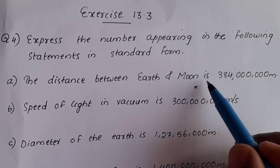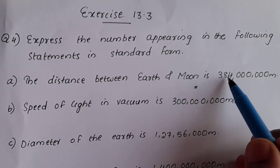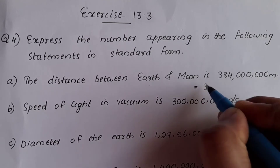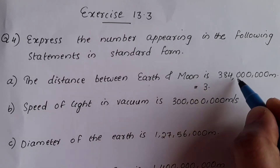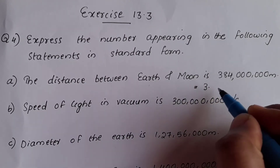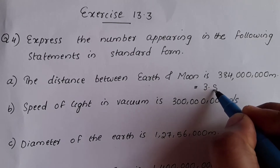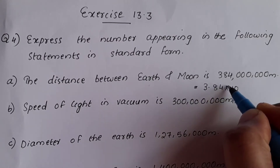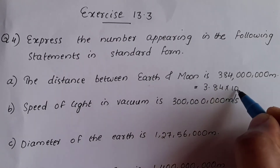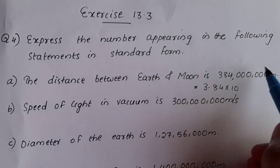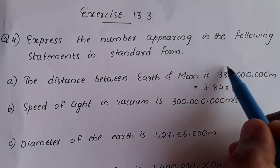The distance between Earth and Moon — if you convert a large number into the standard form, we get 3.84 into 10 raise to 10, where 10 is the exponent.